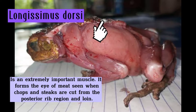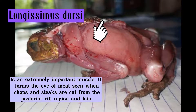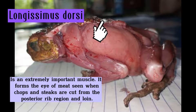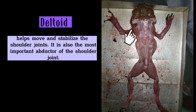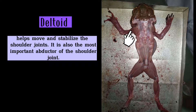The longissimus dorsi is an extremely important muscle. It forms the eye of meat seen when chops and steaks are cut from the posterior rib region and loin. The deltoid helps move and stabilize the shoulder joint and is also the most important abductor of the shoulder joint.